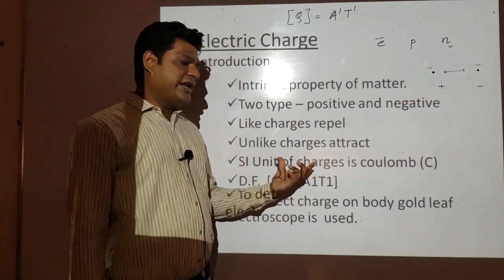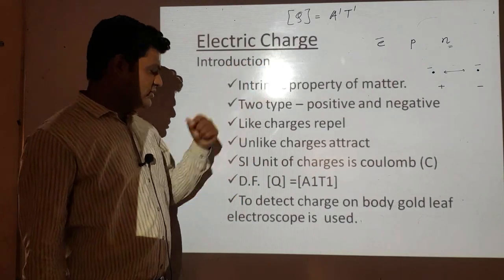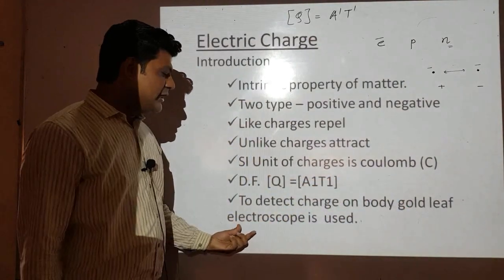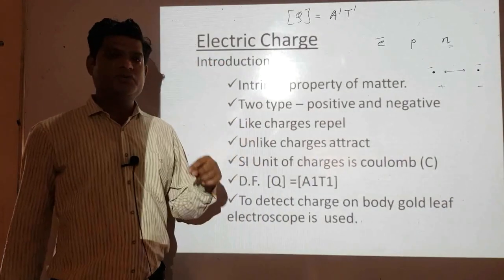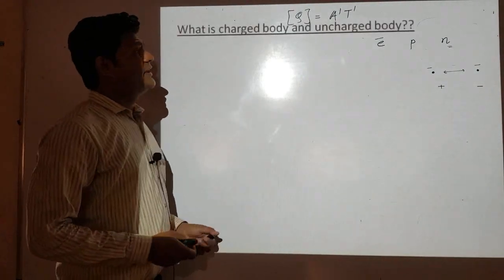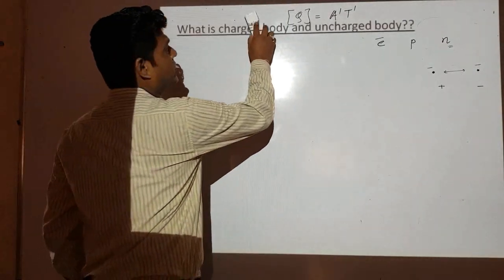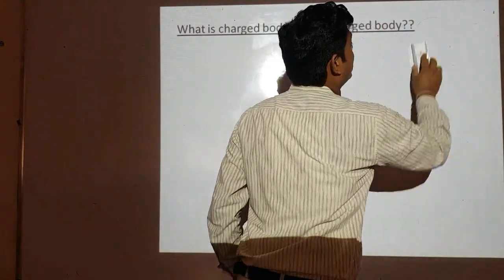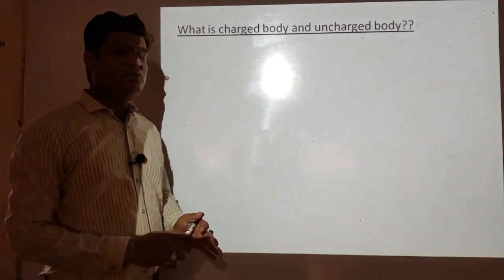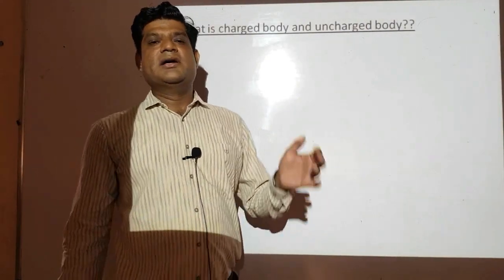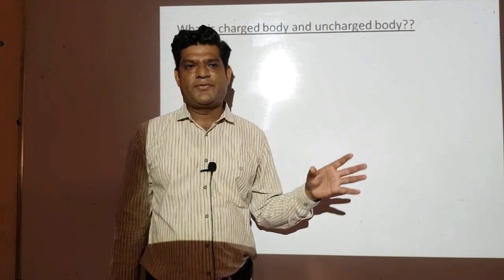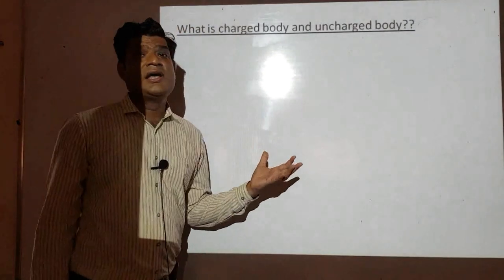To detect the charge on a body, we use the gold leaf electroscope. The next concept we need to understand is what is a charged body and what is an uncharged body. During this chapter, we will use the terms charged body, uncharged body, and neutral body, so we must know their meanings.